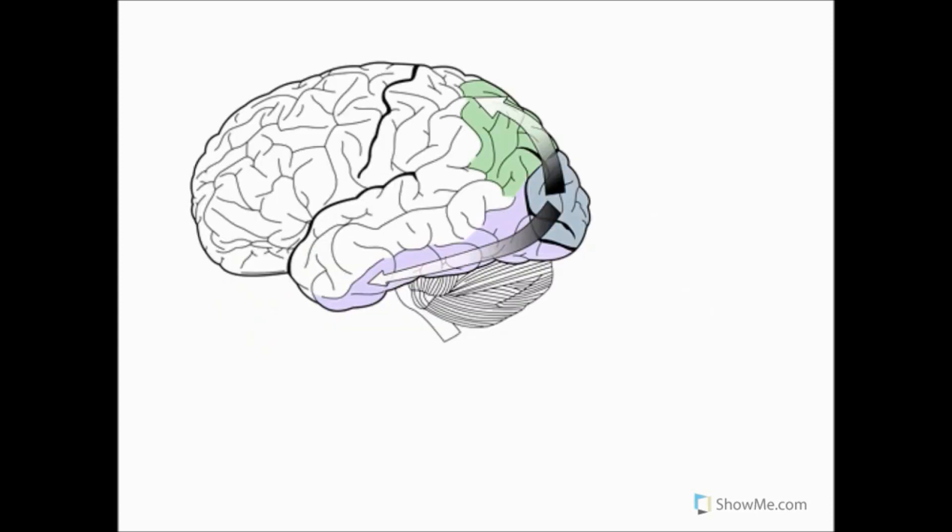What happens to the visual information after V1? Information from V1 projects to other areas of the cerebral cortex for more complex visual perception, the first of which is the dorsal stream, also known as the vision for action stream. This involves projections to the parietal lobe and is involved in locating targets, executing motor functions, and analyzing movement. Lesions in this region cause a condition whereby the individual can't see moving things and effectively sees movement as a series of photos. This condition is called akinetopsia.